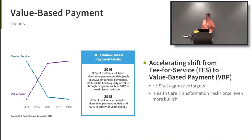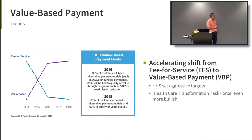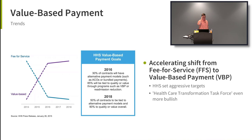The Department of Health and Human Services set a 2016 target to have 30% of their contracts in alternative payment models and 85% tied to value-based purchasing. By 2018, they wanted to raise those numbers to 50% tied to alternative payment and 90% to value-based purchasing. Additionally, an independent coalition called the Healthcare Transformation Task Force made a goal that by 2020, over 75% of all their revenue would be value-based purchasing and reimbursement.